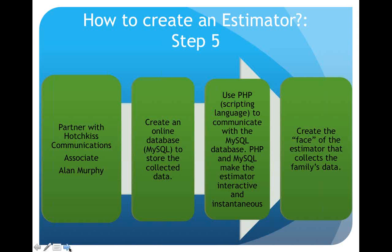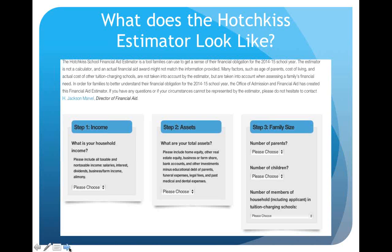This was sort of the 1.0 version of our site. People would put in their income, assets, number of parents, number of children, and number of members of the household in tuition-charging schools. They'd hit the estimate button and the number would come out. We framed it as how much a family would be expected to pay — not how much financial aid they'd receive — with directions at the top to make clear this is not an exact number but a guide.